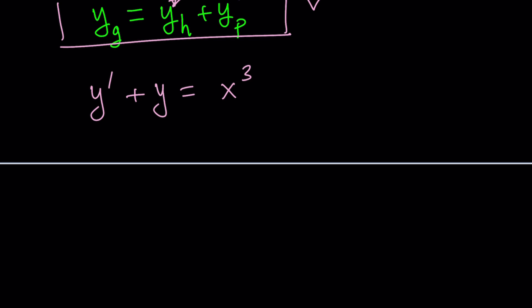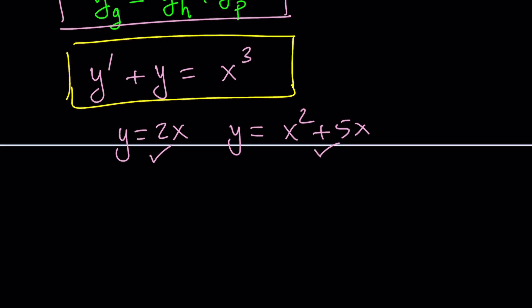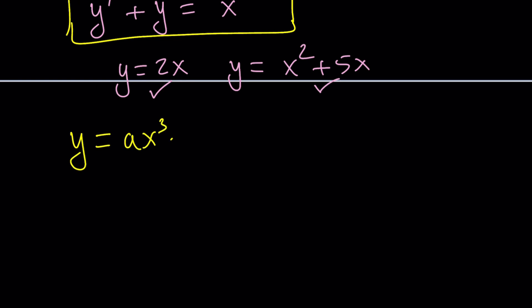Because I have a polynomial on the right-hand side, that makes me think y should probably be a polynomial. Polynomial is just powers of x that are non-negative integers, right? So we have something like y equals 2x, y equals x squared plus 5x. But if you use a linear polynomial or a quadratic polynomial, they're not going to work, because when you differentiate, it's going to be reduced in degree, and when you add it to your original, you're not going to get x cubed. So that means I do need a cubic polynomial. Does that make sense? Because if y is cubic, like ax cubed plus bx squared plus cx plus d, when I differentiate it and add it to y, I'm still going to have x cubed, which is cool. Let's do it.